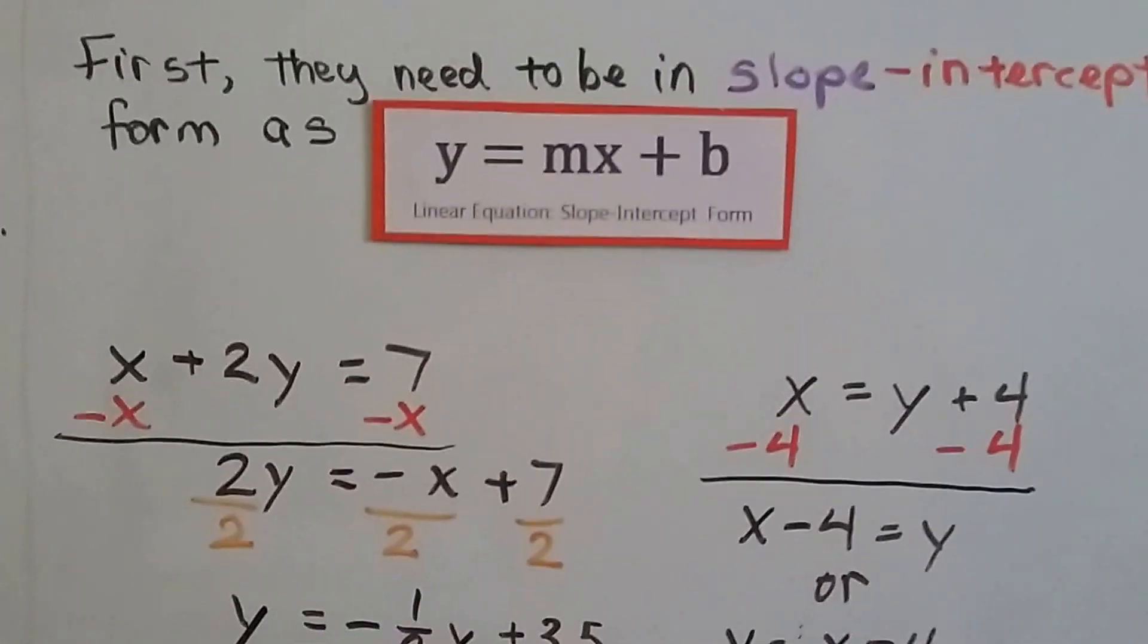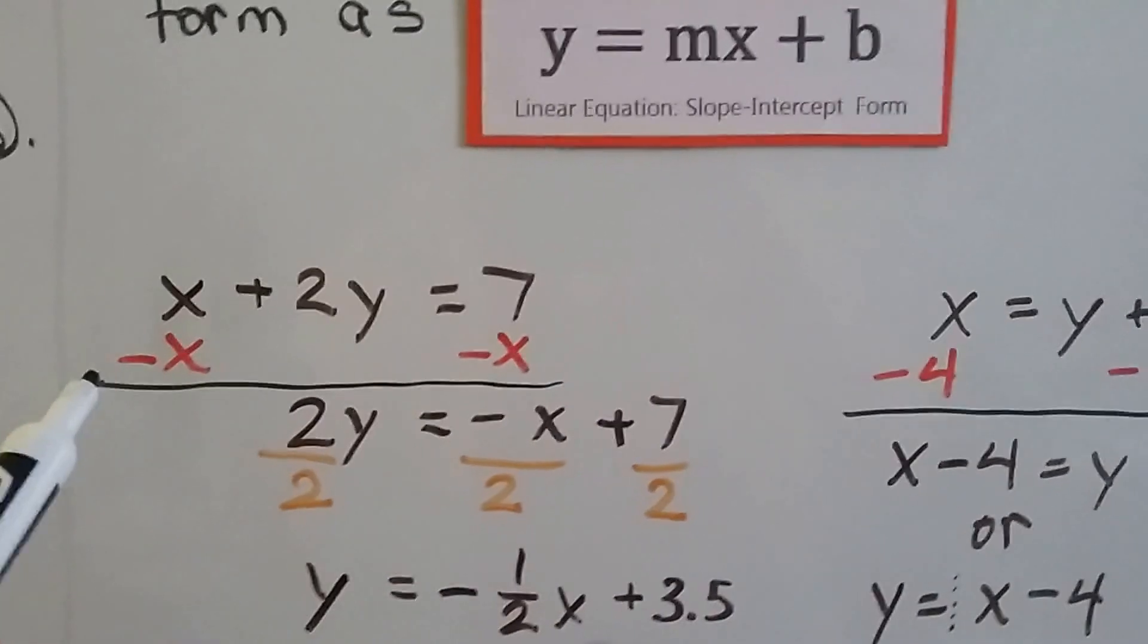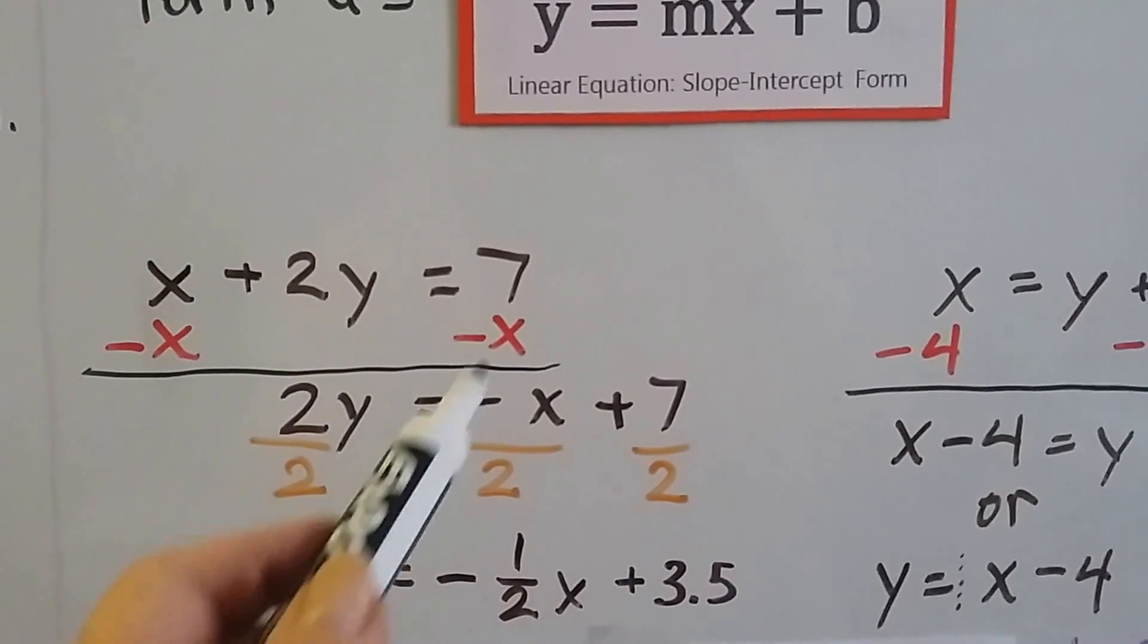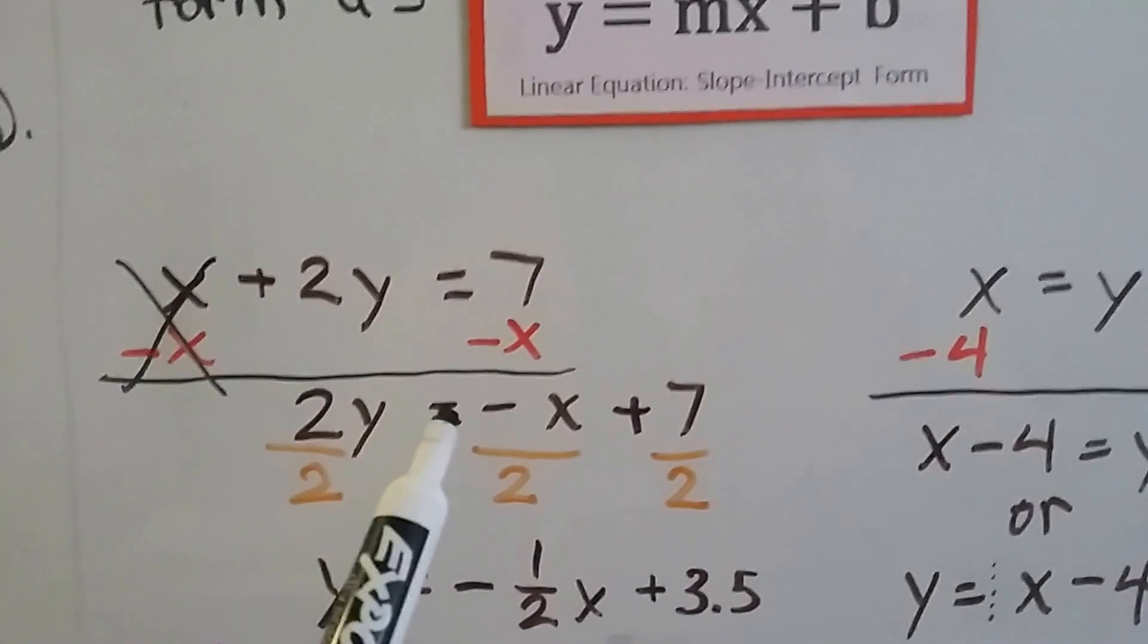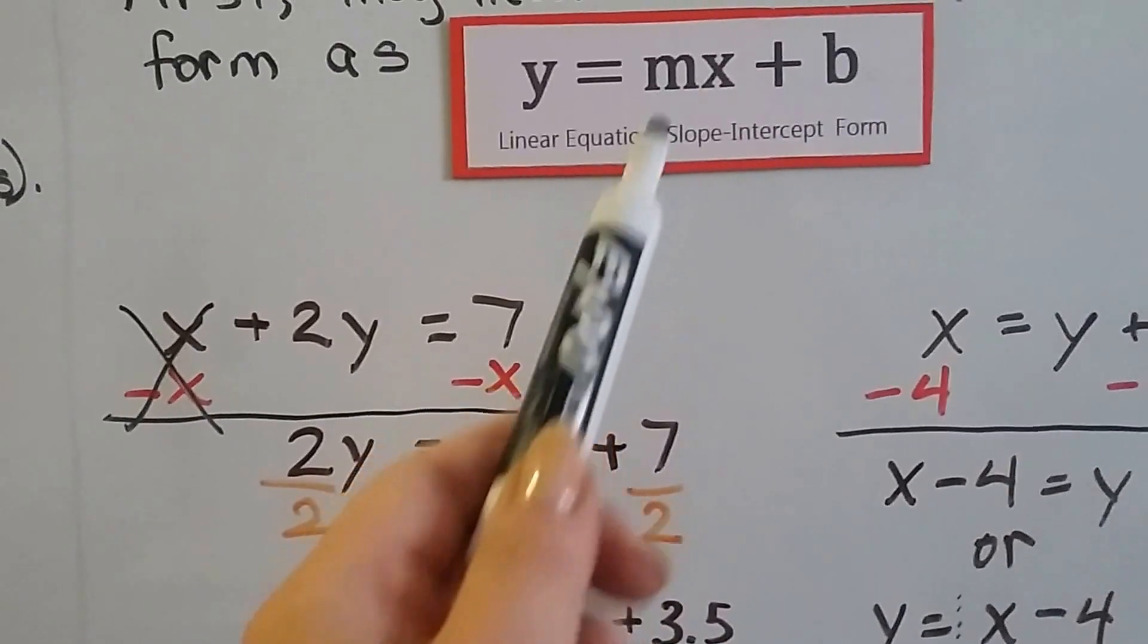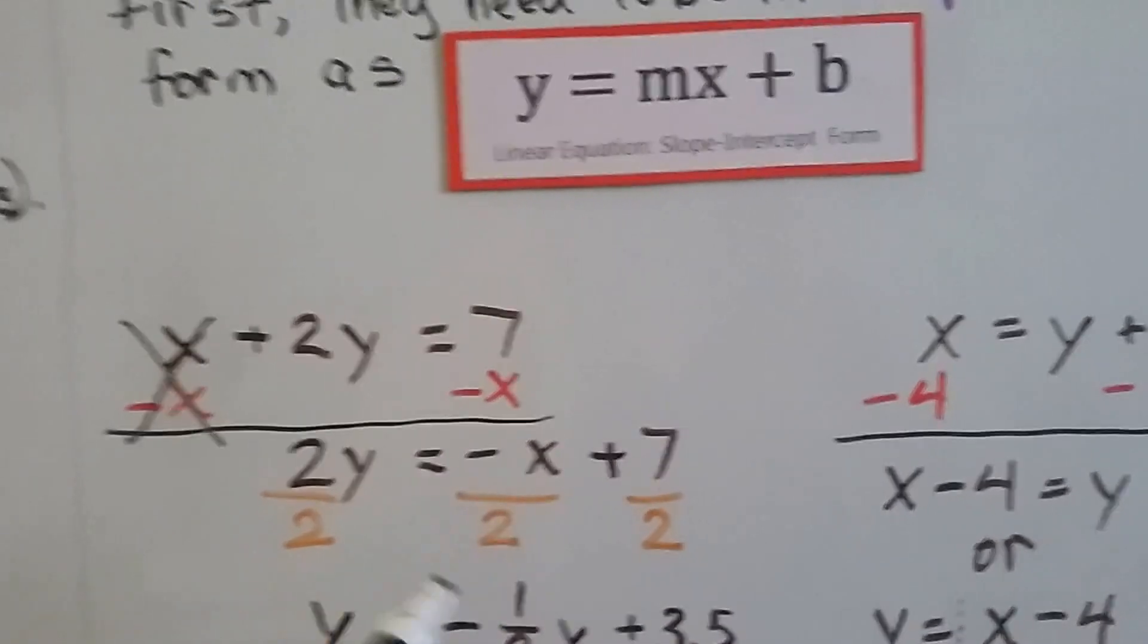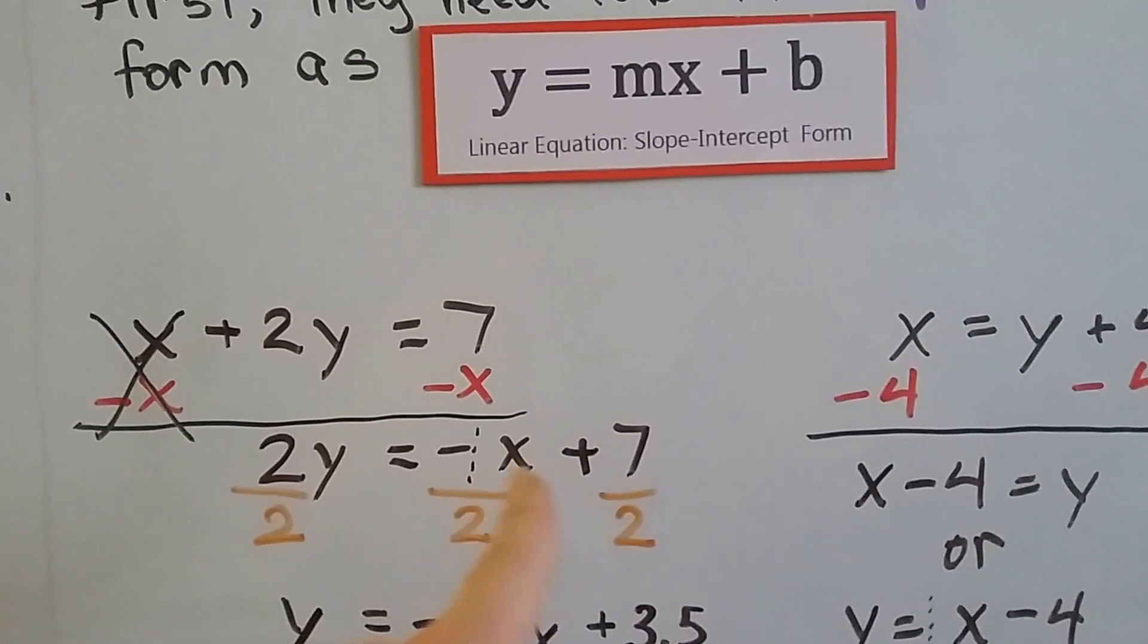So what we do is, we use our additive inverses, and for the x plus 2y equals 7, we just subtract x from each side. That creates a zero pair here and eliminates it. And now we have 2y equals negative x plus 7. So remember that x has to come up front. Remember our friendly invisible one is here. So this is like a negative 1x.